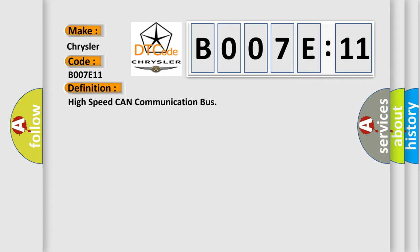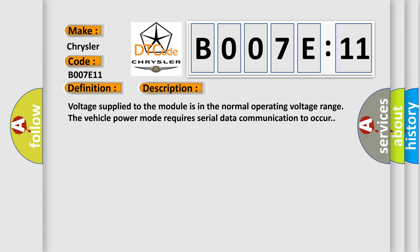And now this is a short description of this DTC code. Voltage supplied to the module is in the normal operating voltage range. The vehicle power mode requires serial data communication to occur.